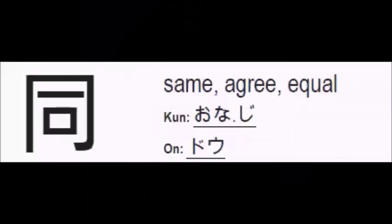The next kanji is Onaji. This kanji has 6 strokes. Please pay attention to the stroke order: 1, 2, 3, 4, 5 and 6. The Kunyomi reading of this kanji is Onaji and the Onyomi reading is Do. The meanings associated with this kanji are same, agree, and equal.